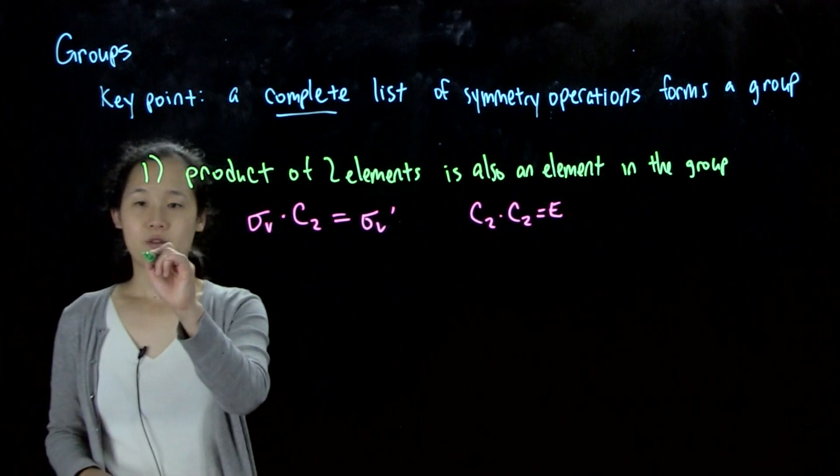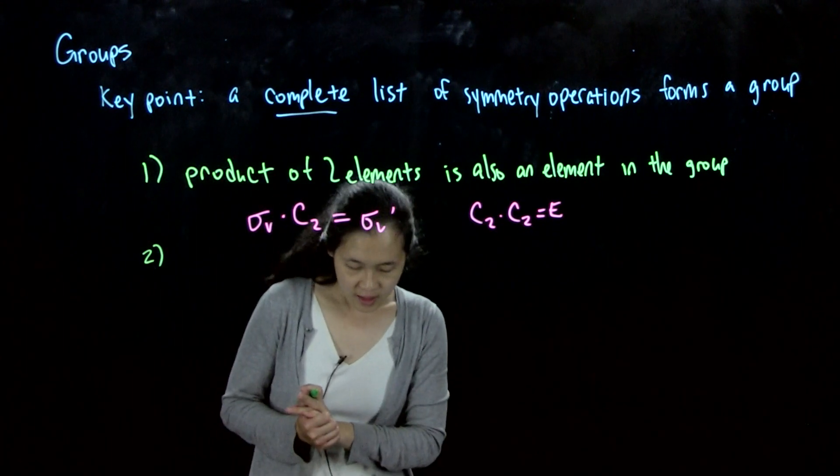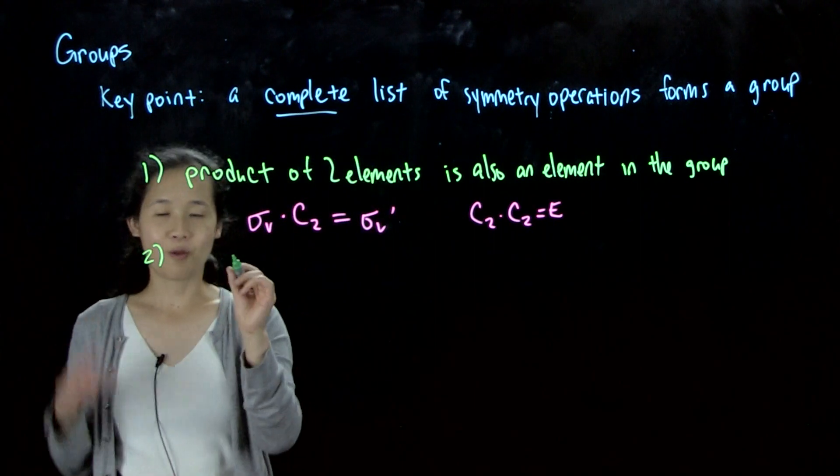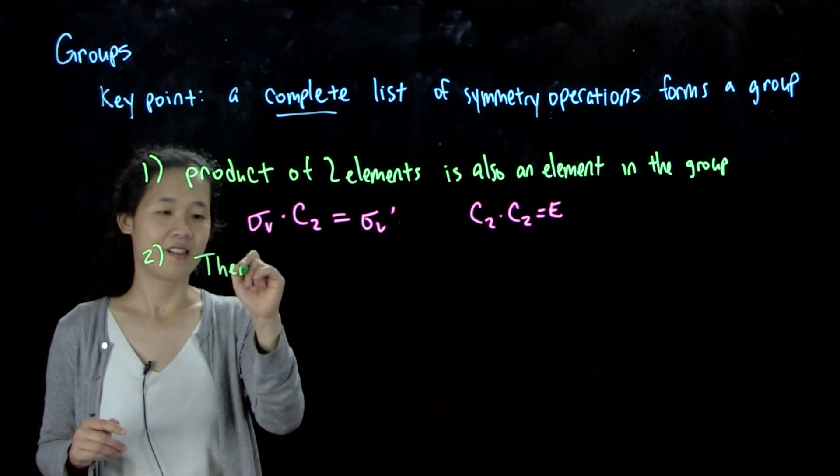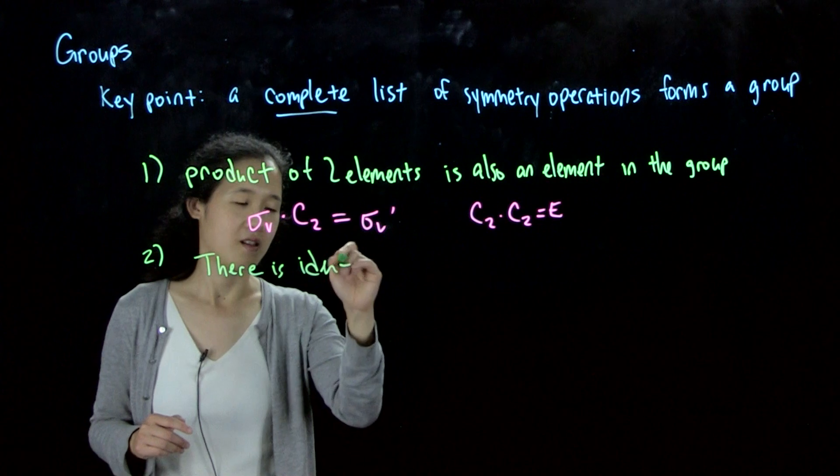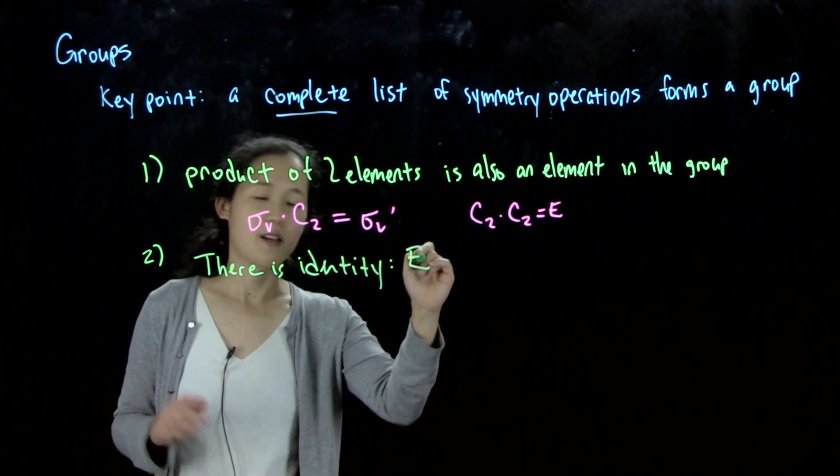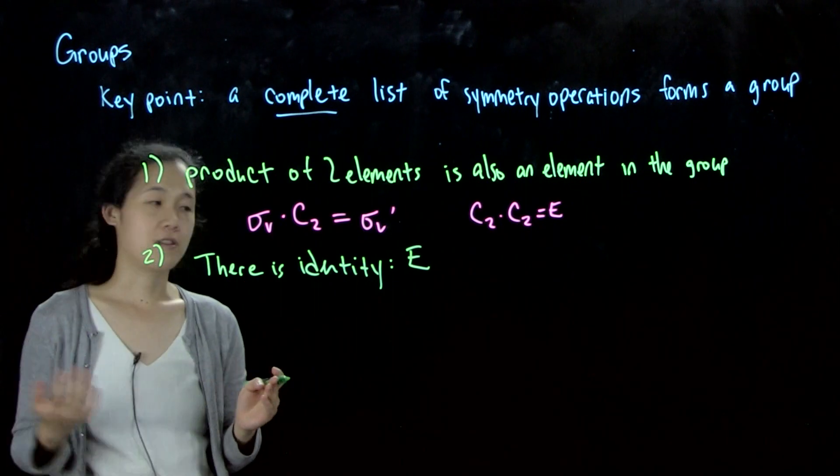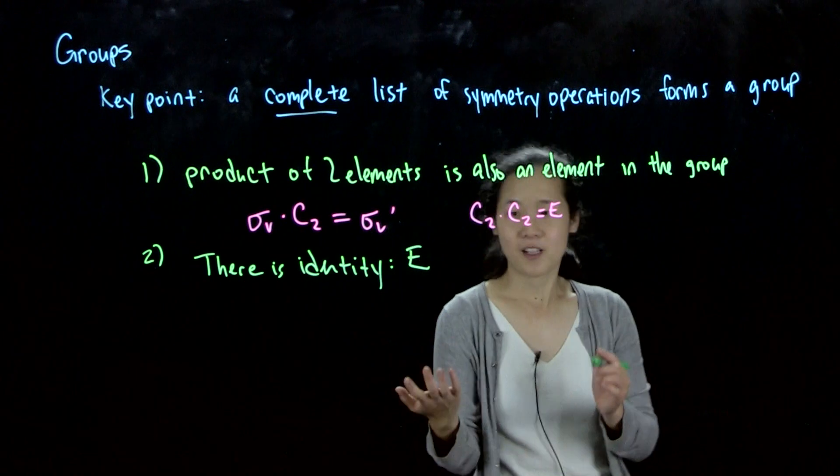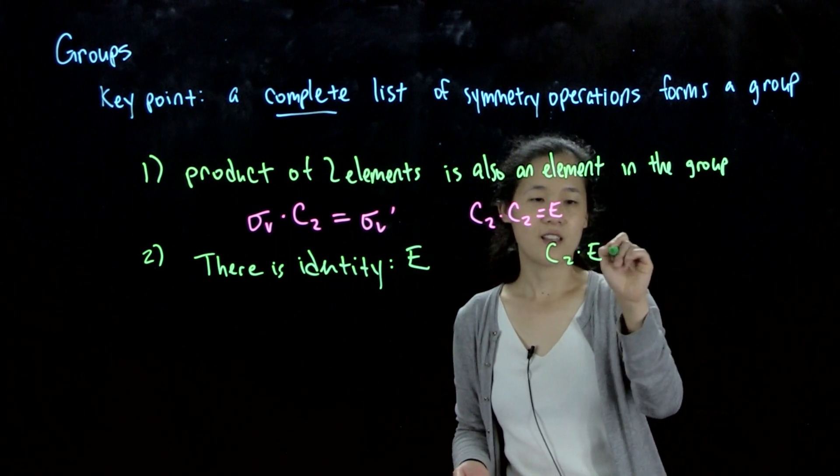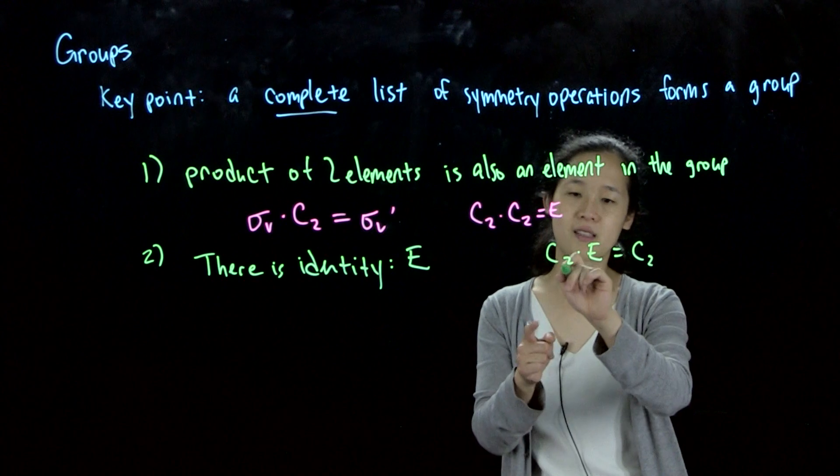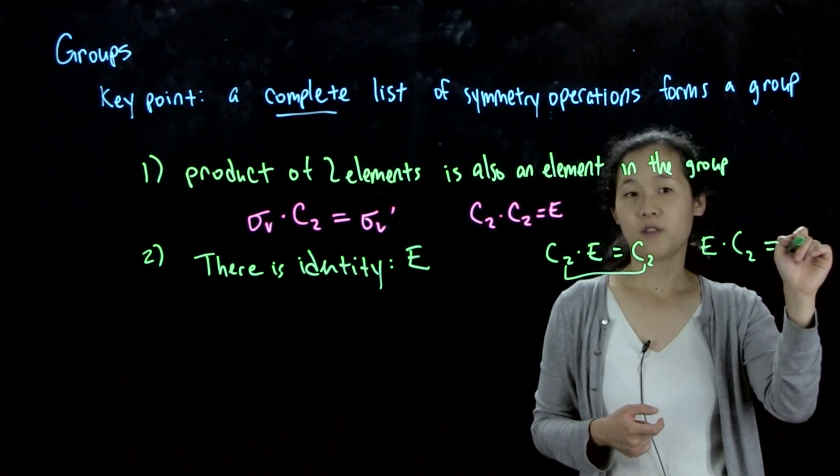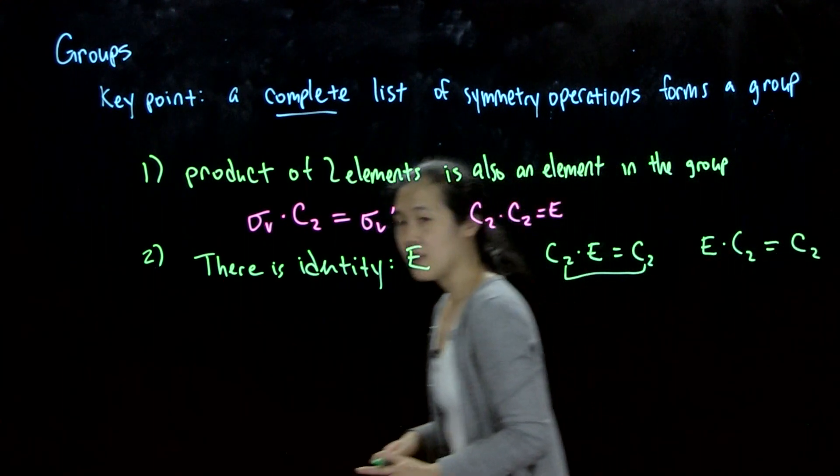Second rule for these mathematical groups is one element must commute with all others and leave everything else unchanged. So what this means, basically, there is identity element. And then that is solved because we said that the identity operation, E, is valid for every molecule. So what this commuting business and leaving unchanged is that if we did C2 times E equals C2, so C2 and C2 are unchanged. If we do it the other way around, if we did E times C2, this also equals C2. So it commutes. Okay, great.